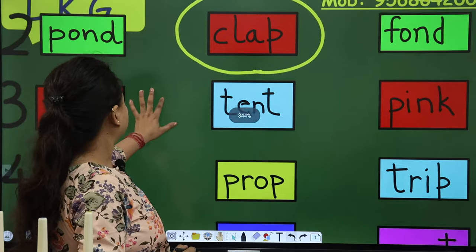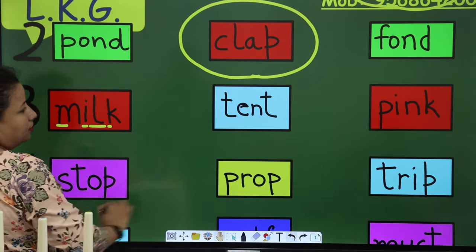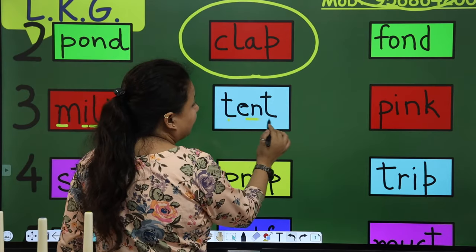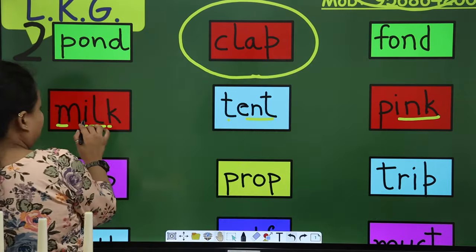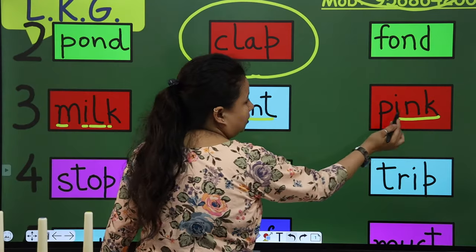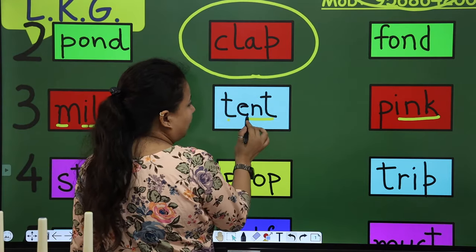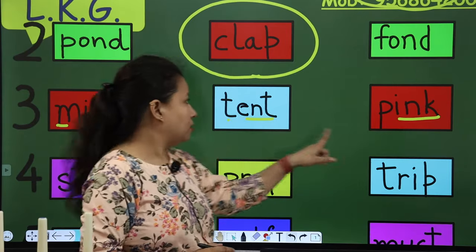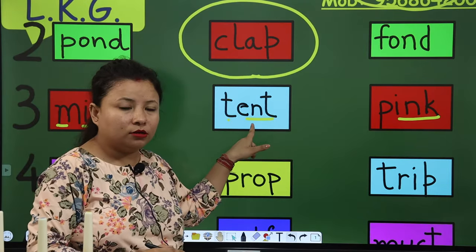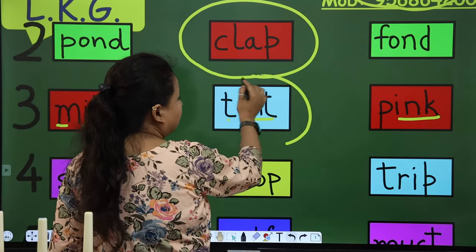Now next is milk. This is tent. And this is pink. So E, E, or I, I. So this is E. The sound is different. Milk, pink. And this is tent. So tent is different. So now we have to make a circle.